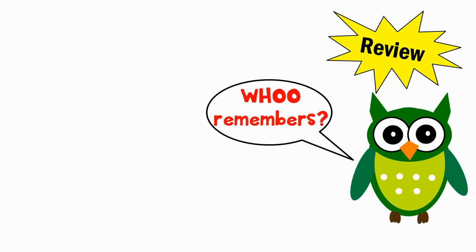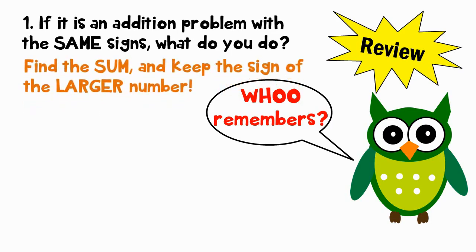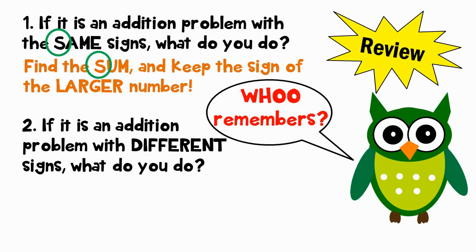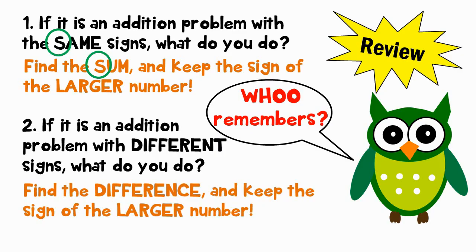Let's review. Who remembers? Number 1: If it is an addition problem with the same signs, what do you do? Find the sum and keep the sign of the larger number. A little trick to remember this rule is to notice the S — same begins with S and so does the word sum. Number 2: If it is an addition problem with different signs, what do you do? Find the difference and keep the sign of the larger number. Another little trick: different begins with D and so does the word difference. So same signs, find the sum; different signs, find the difference.